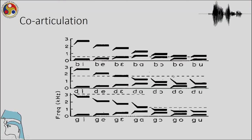Apart from voice onset time and categorical perception, we also saw co-articulation — how formant transitions can change based on the following vowel. These three consonants showed that irrespective of whether it is the same consonant or not, depending on the following vowel, transitions could be different. A 'ba' has a different transition from a 'b' followed by another vowel. Similarly across consonants, 'b' is different from 'g' and 'g' is different from 'd'. There are differences in formant transitions both across vowels and across consonants.